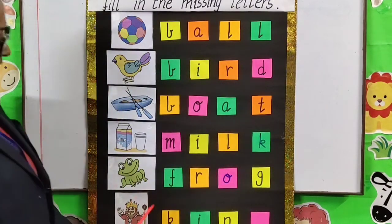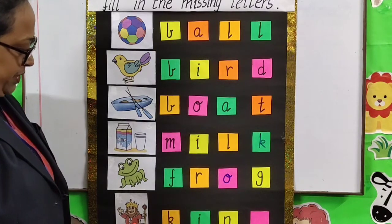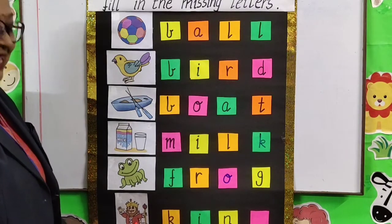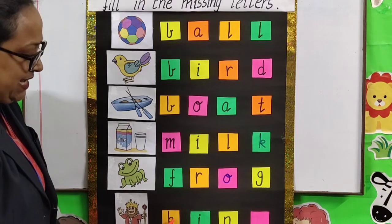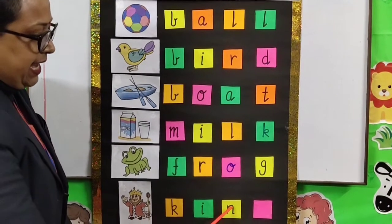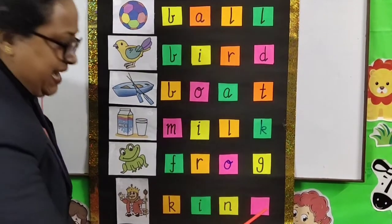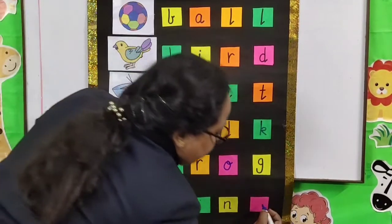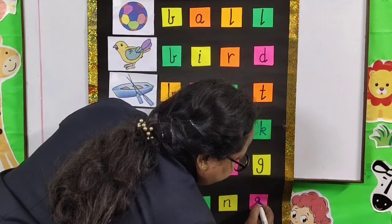And the last picture. It is a picture of a king. And the spelling is K-I-N. G is missing here. We have to write G.